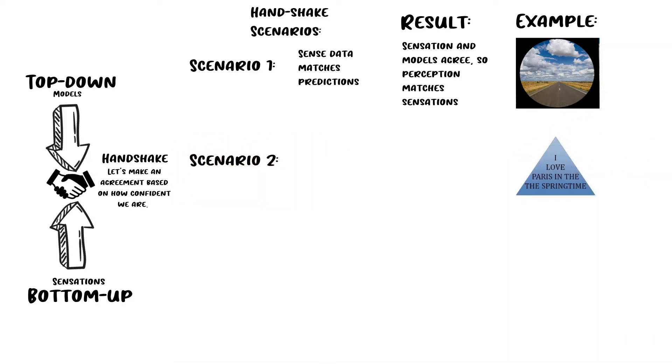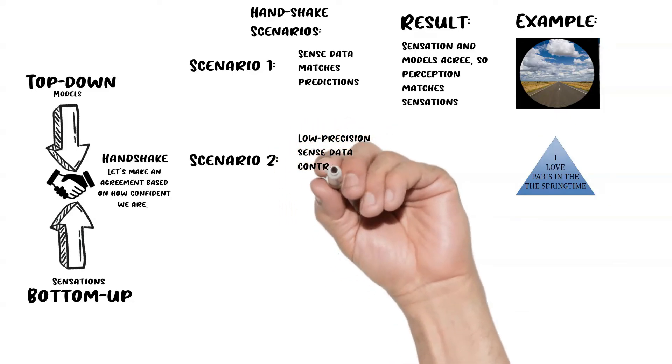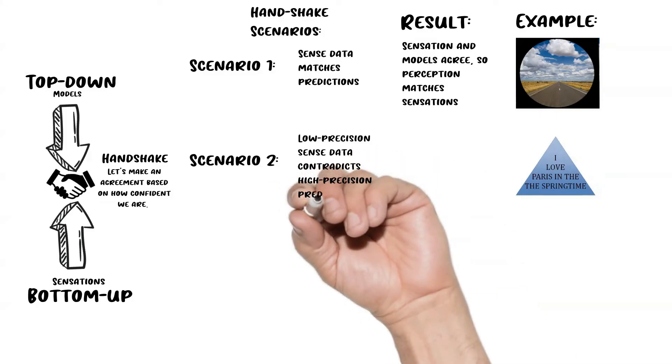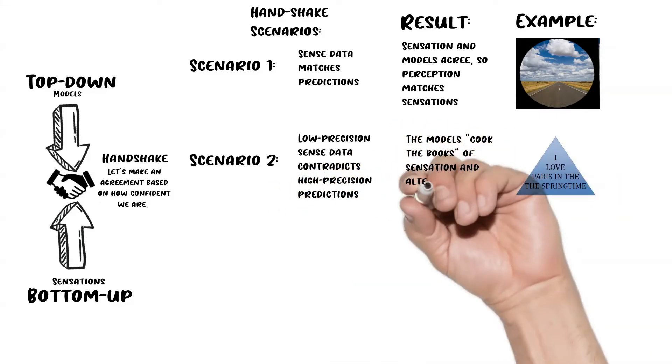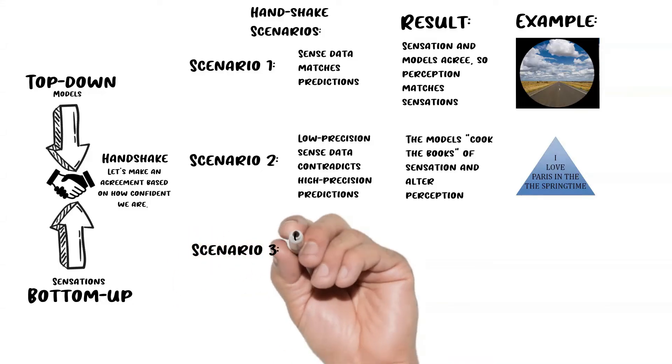Read to yourself what's in the triangle. I'll give you a second. What the triangle actually says is 'I love Paris in the the springtime.' This is an example of our top-down stream's ability to cook the books and alter what we perceive. It replaces the bottom-up stream, which is perceiving the two 'the's, and makes it so that the sentence is coherent and we don't even see that there are two 'the's.